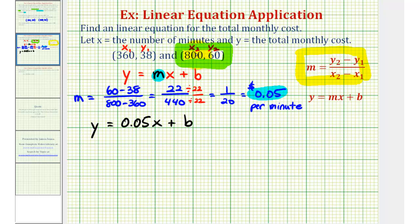So we're going to substitute 800 for x, 60 for y, and solve for b. So we would have y, which is 60, equals 0.05 times x, which is 800, plus b.